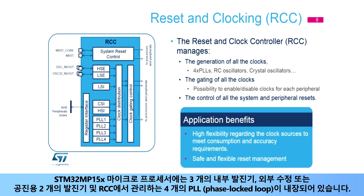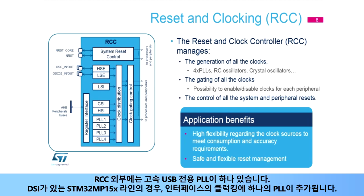Four phase-locked loops, or PLLs, are managed by the RCC. Outside the RCC, there is also one dedicated PLL for the high-speed USB.